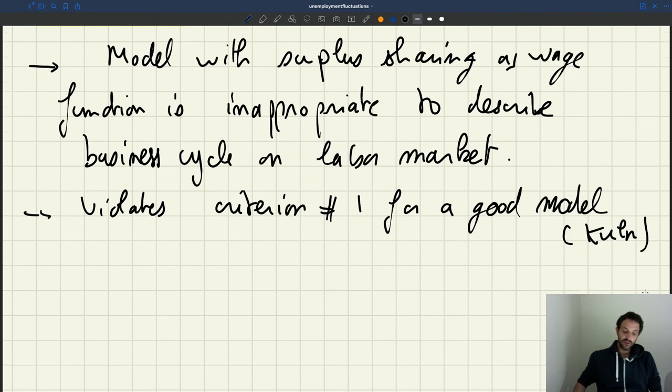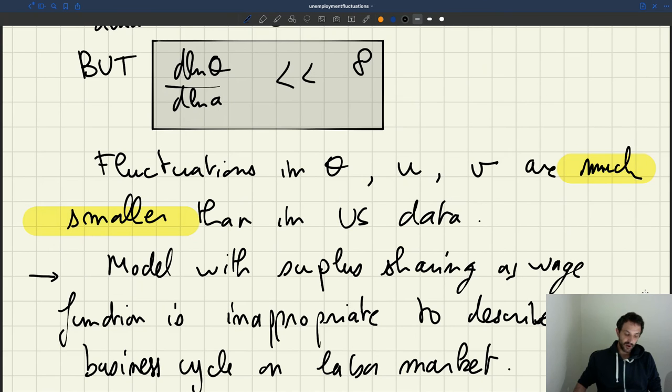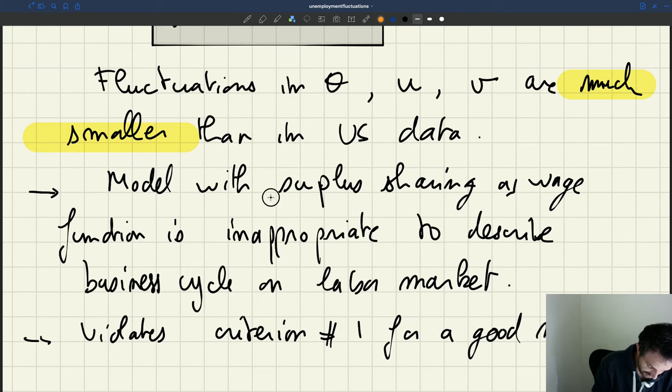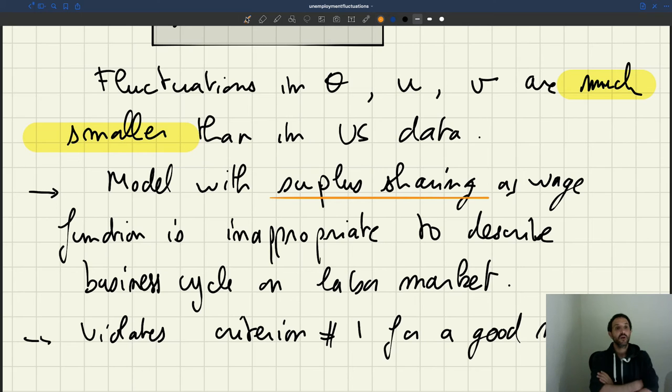And so actually, if you read the literature, what a lot of people took away from the Schindler paper, from this result, is that - so something here that of course I'm going to highlight is that this is when we use the matching model with surplus sharing. Well, because surplus sharing or Nash bargaining were such classic assumptions, and because they've always been used in the literature, a lot of people took away from the Schindler analysis that we should throw away the matching model in the trash can. And the matching model was not helpful to think about business cycle as it wasn't helpful to describe unemployment, because it wasn't able to generate fluctuations that were large enough.